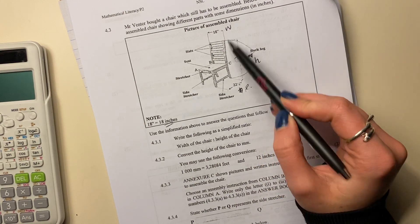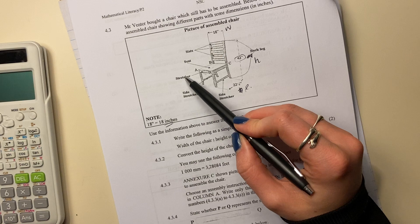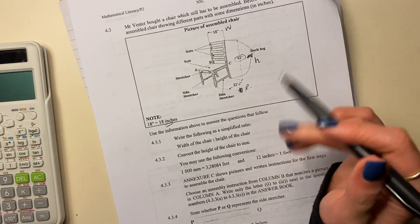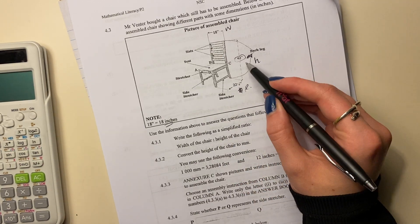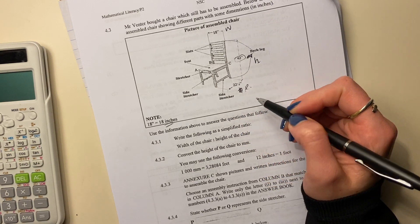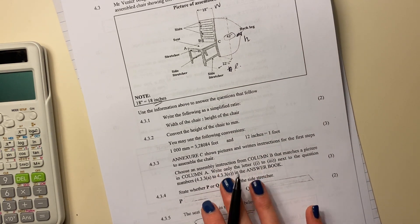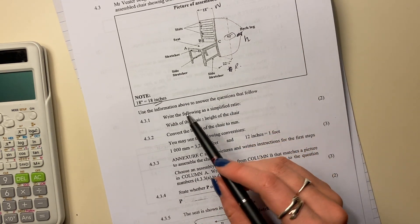So here's the chair: A, B, C, D. There's the back leg, there's the seat where you put your bum, there's the slats for your back, and the stretcher and side stretchers kind of give the stability, right? So this is the height, this is the width, and this is the length. That is how we're going to take things into consideration and answer the questions using that information.